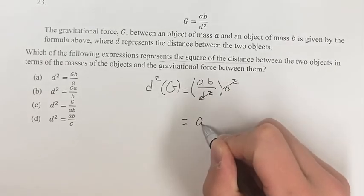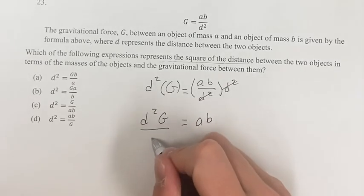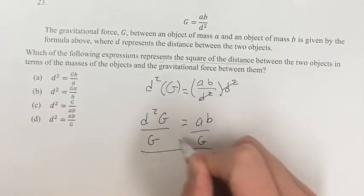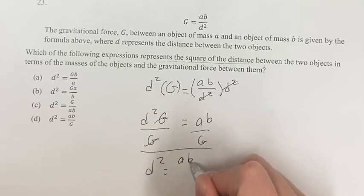And you'll just have ab is equal to d squared times g. Now you want to solve for d squared, so we just divide both sides by g. These cancel, and we have d squared is equal to ab divided by g.